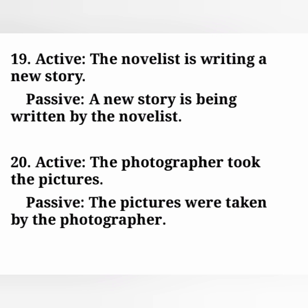Active: the novelist is writing a new story. Passive: a new story is being written by the novelist. Active: the photographer took the pictures. Passive: the pictures were taken by the photographer.